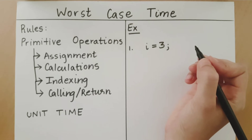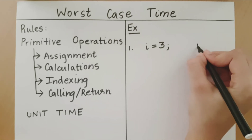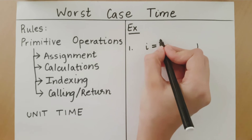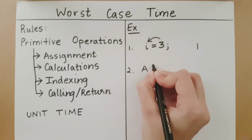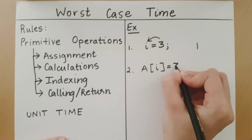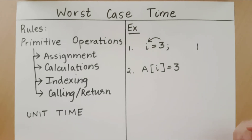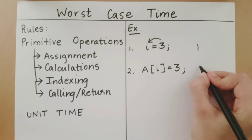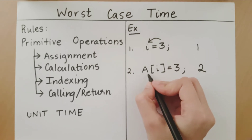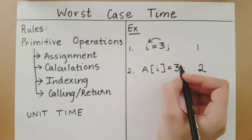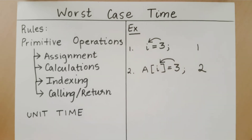Let's look at a few examples and see if we can count the primitive operations in those statements. The first statement is i = 3. This takes one unit of time because it performs one assignment operation. The second example is a[i] = 3. This takes two units of time: the first unit is for indexing into the array a at position i, and the second unit of time is for assigning 3 to this element. In this way, we can count the number of operations in an entire algorithm.